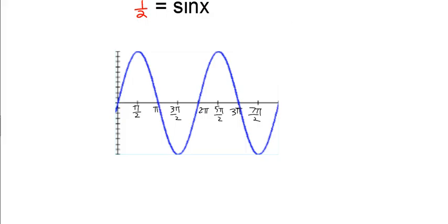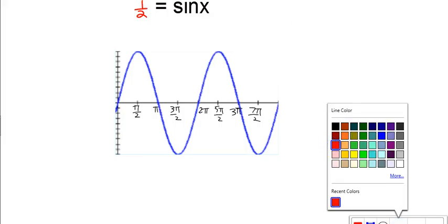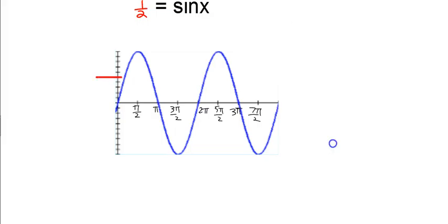What I'd be looking for on this graph would be all the places where the value of one half on the y-axis is crossing my graph. So I go up 0.1, 0.2, 0.3, 0.4 — 0.5 is right here. So right here is where it's one half. It happens right here, right here, right here, and right here.